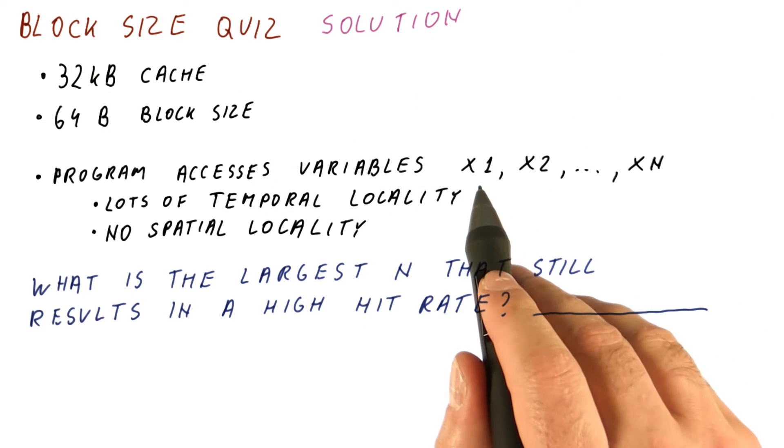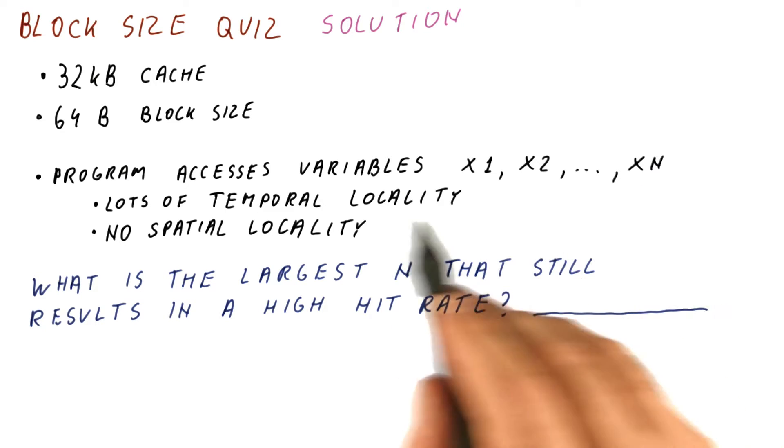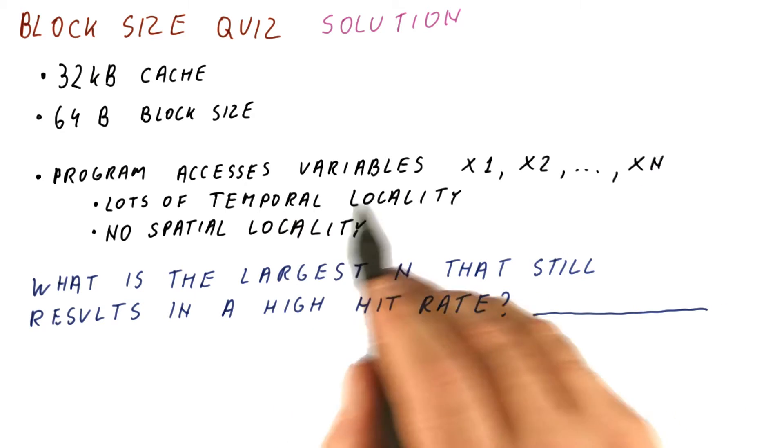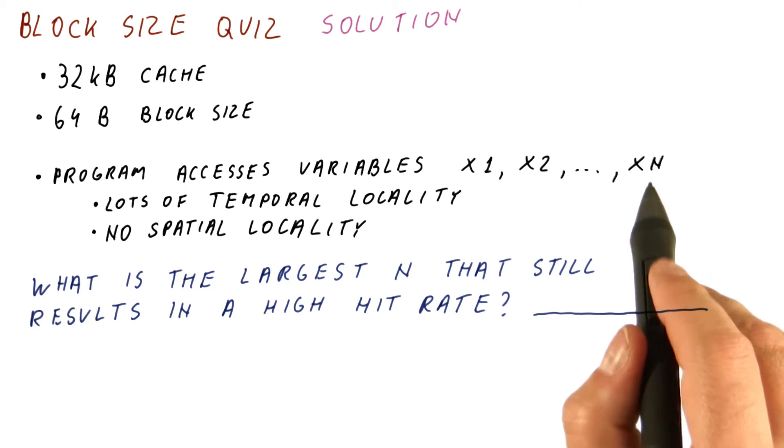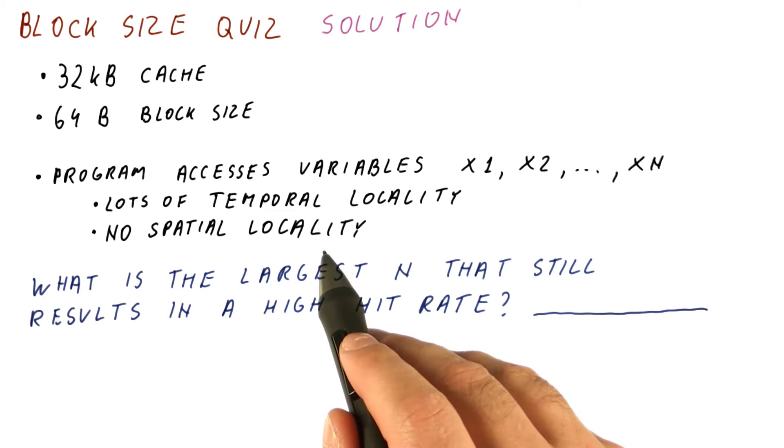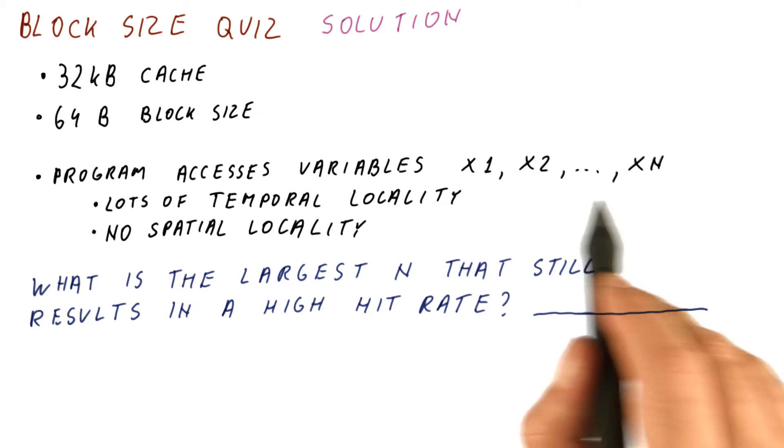And a program that accesses N variables that have lots of temporal locality, meaning each of these variables is accessed often in the program. But no spatial locality, meaning they are nowhere close to each other.